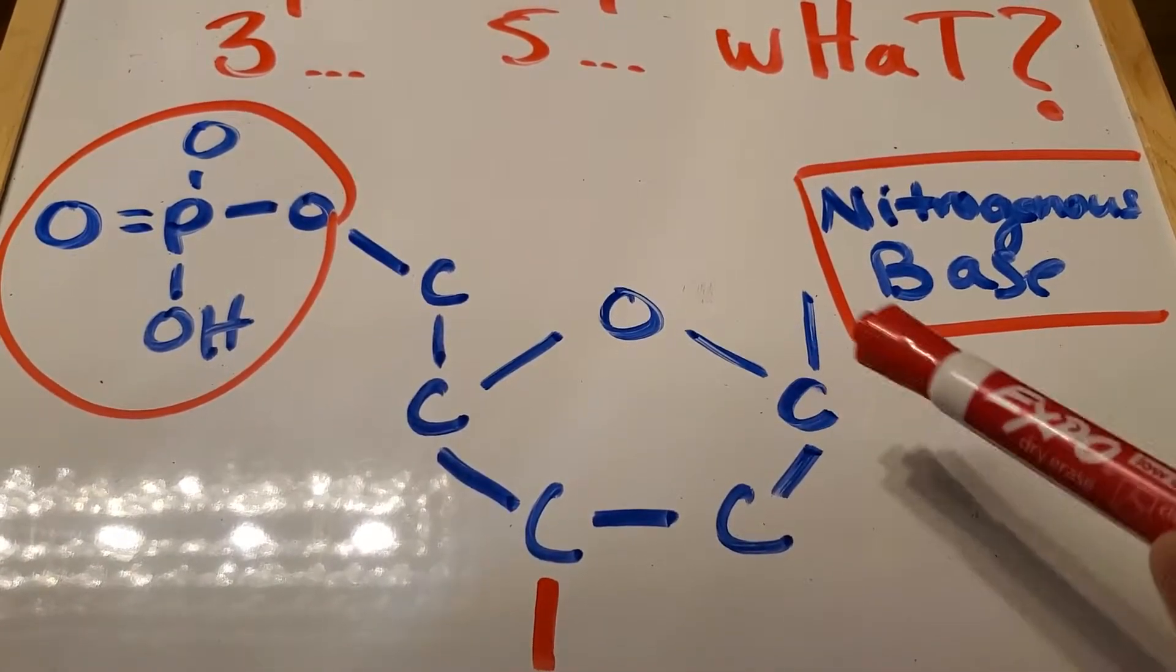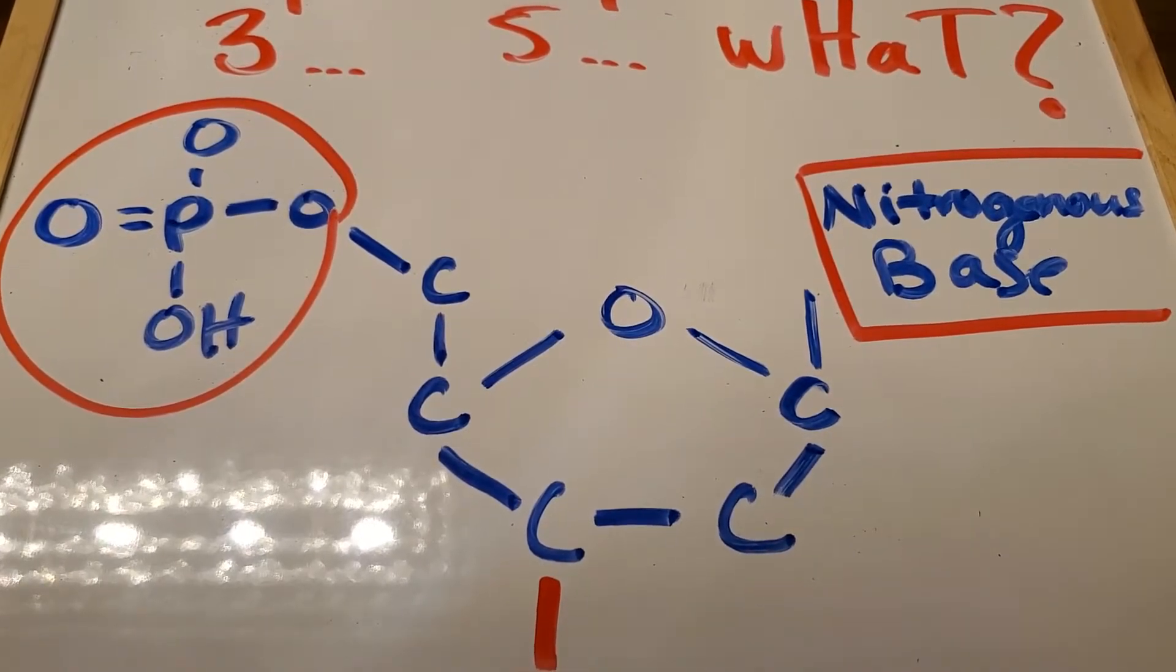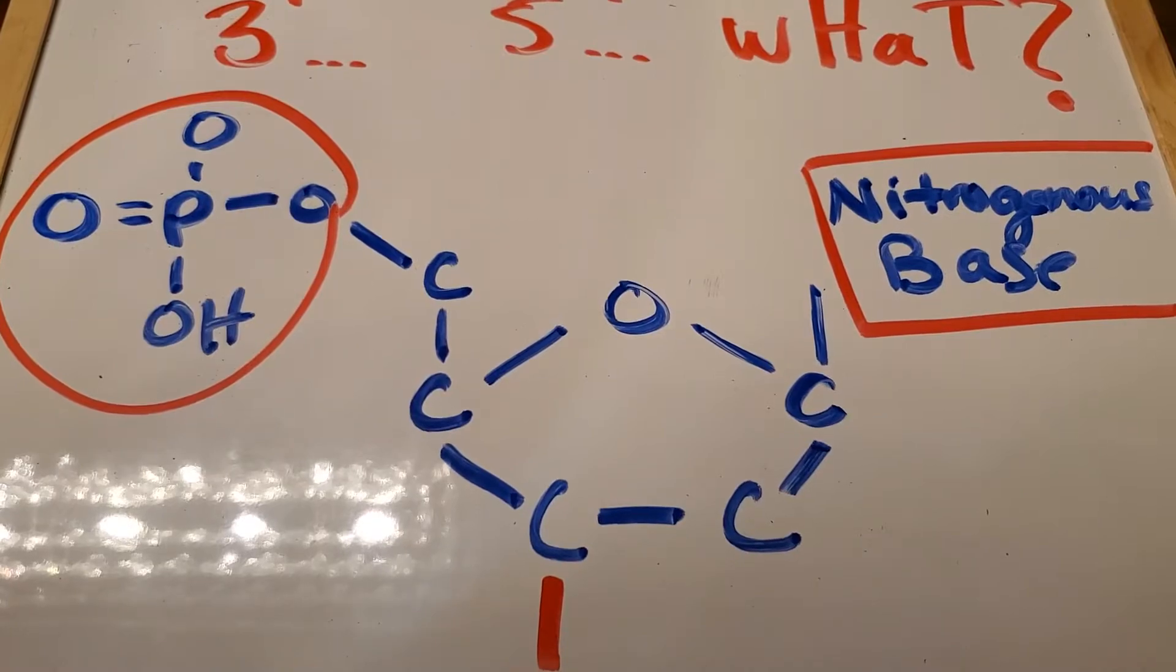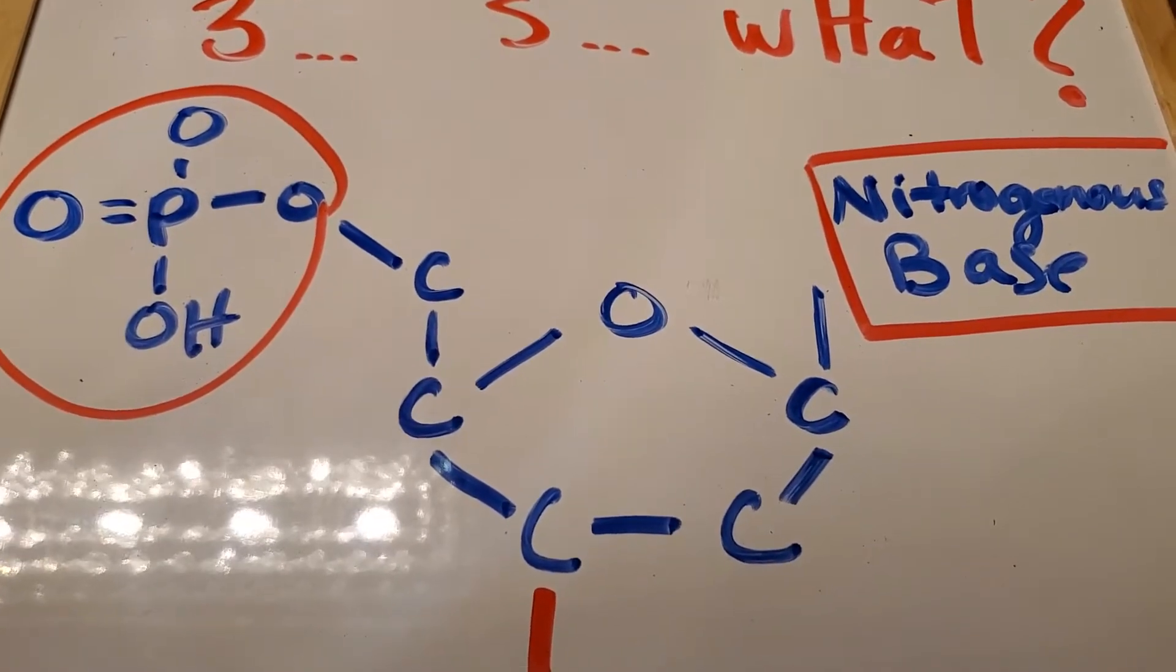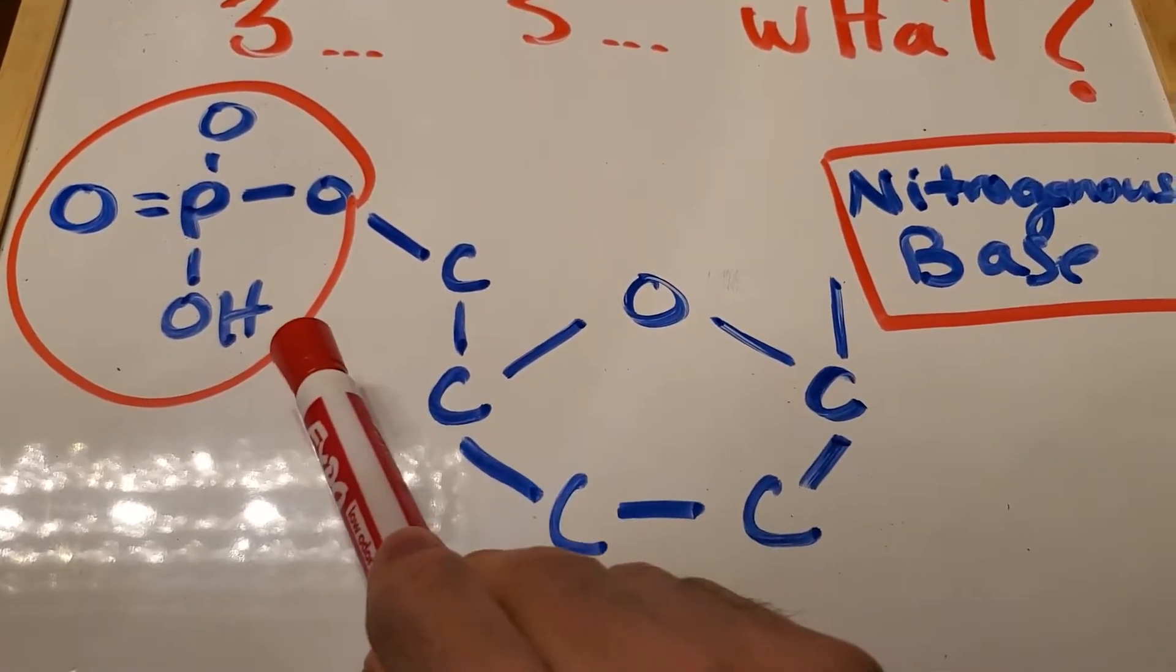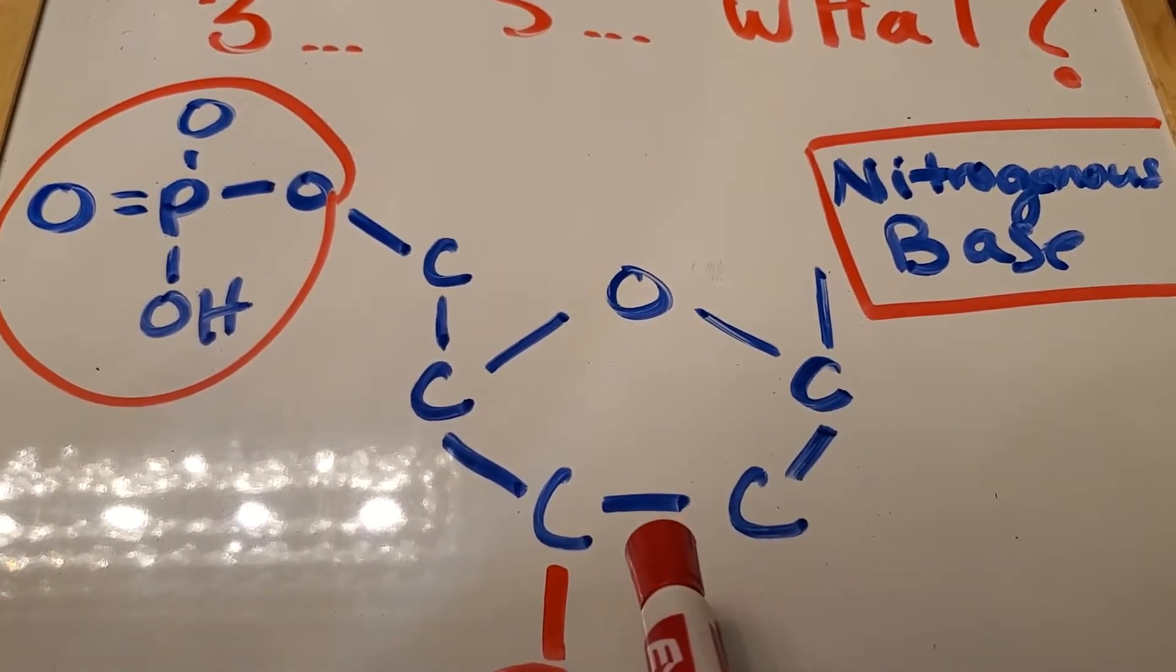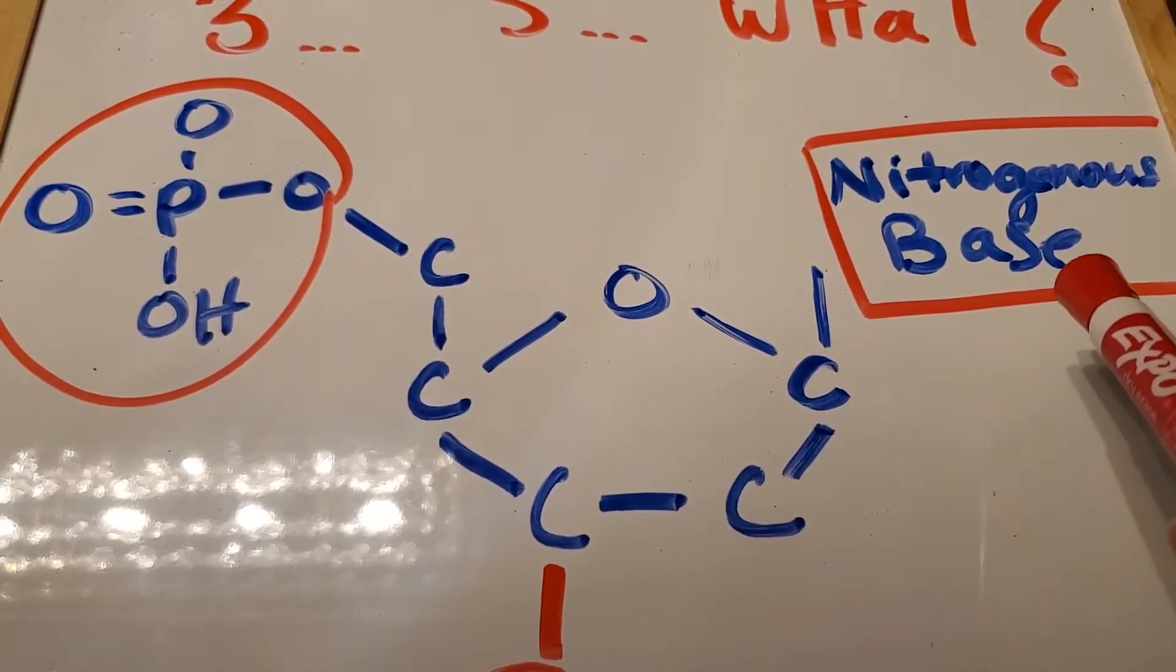One of these is going to be attached to another one of them, which is attached to another one of them, which is going to make a long chain of nucleic acids. So, the components here, we've got our phosphate group, our deoxyribose sugar, 5-carbon sugar, and our nitrogenous base.